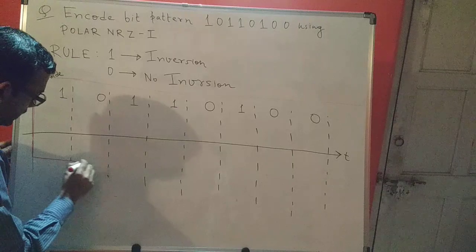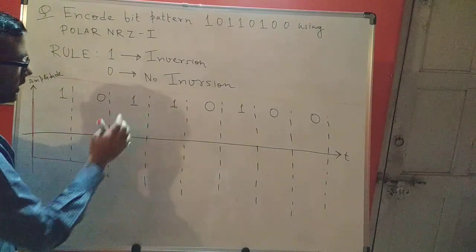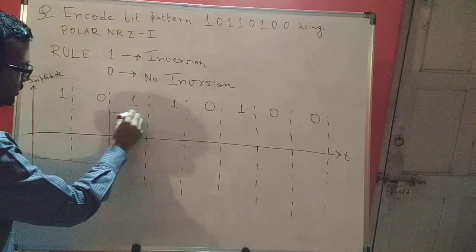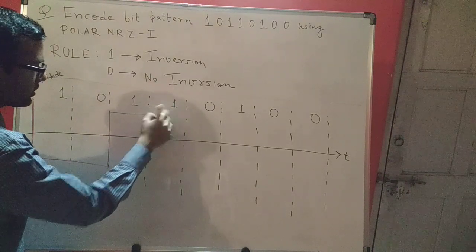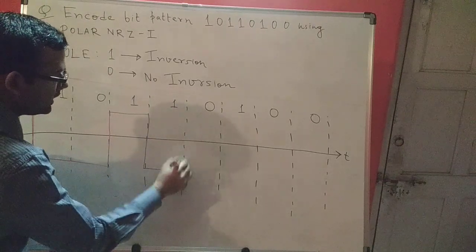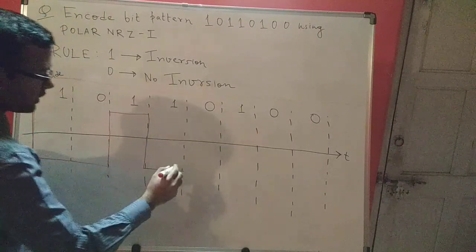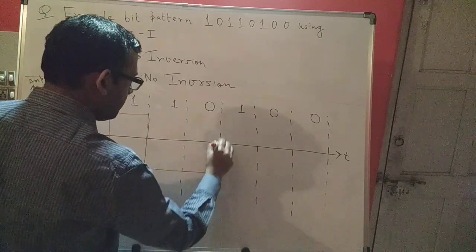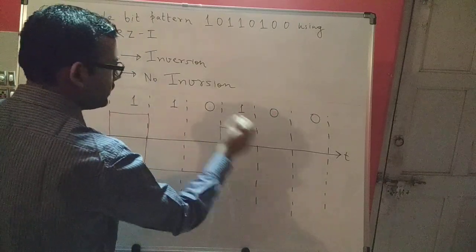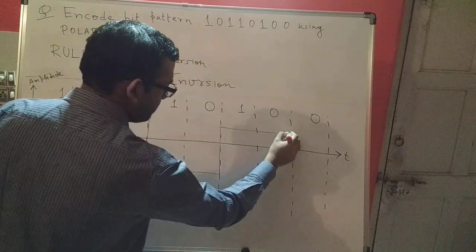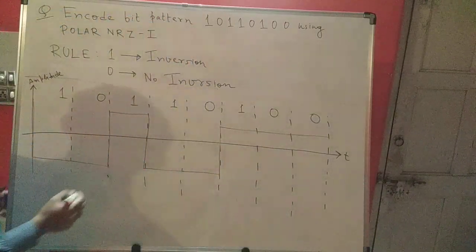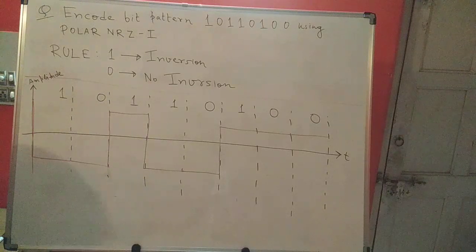Next I see a 1 — inversion — so I go back up and proceed. Then another 1 — inversion — I come back down and proceed. A 0 — no inversion — I stay down and proceed. A 1 — inversion — I go back up and proceed. A 0 — no inversion — I stay up and proceed. This is how you encode any given bit pattern using Polar NRZ-I.